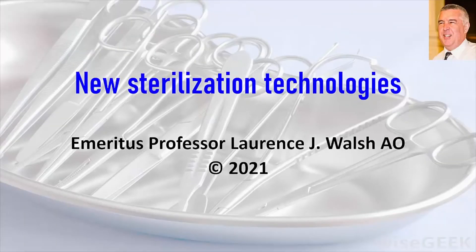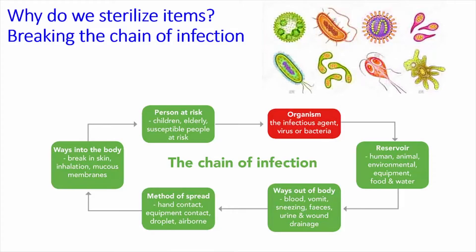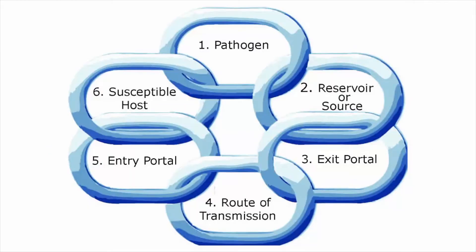This presentation looks at a number of new sterilization technologies. So why do we sterilize items? It's all about breaking the chain of infection. This concept underpins all modern infection control measures — if we can eliminate the organisms, we're not going to be putting our patients at risk of transmission of infection in the clinical workplace setting. When we think about the chain of infection as a physical chain, sterilization interrupts it by breaking the links at two points.